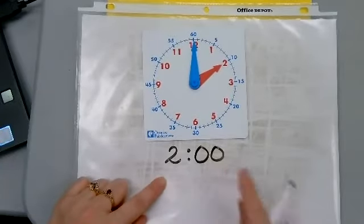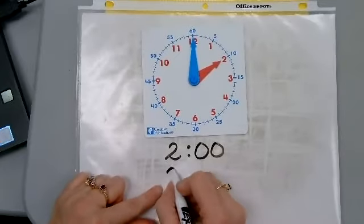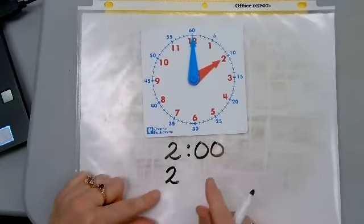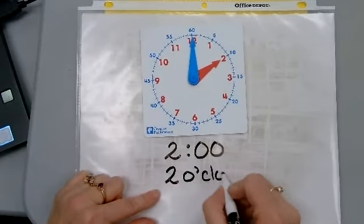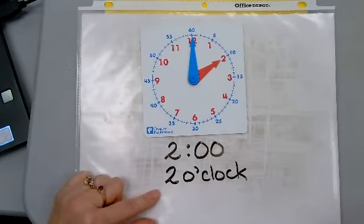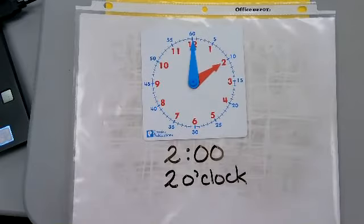This is the digital time. Or I can also show this time as two. And I could write words for o'clock. An o, an apostrophe, and the word clock. So two o'clock is this time.